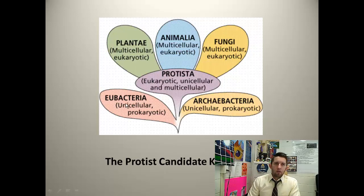In the big picture, here's our kingdom Eubacteria and Archibacteria — we have them stemming off at the base of our tree of life. They're the most archaic, the simplest. Coming from the Archibacteria, we have the protists.